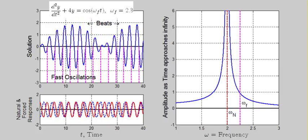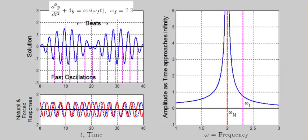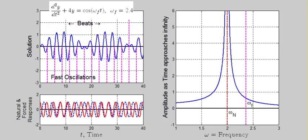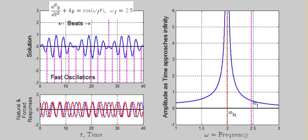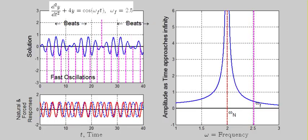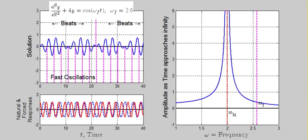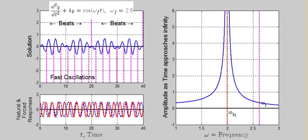For forcing frequencies near but not equal to the natural frequency, one can observe the occurrence of beats, or wave packets containing faster oscillations. The frequency of these beats is proportional to the difference between the natural and forcing frequencies.